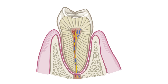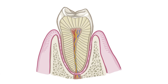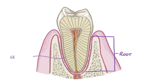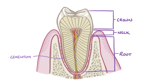The tooth itself can be roughly divided into two parts. The first part is the root, and it sits within the alveolus. The root is covered by a bone-like substance called cementum, and that's what the periodontal ligament's fibers are attached to. Next there's a short zone called the neck, which is a transition between the root and the crown. The crown is the visible part of the tooth that protrudes from the gingiva, and it's covered in enamel.